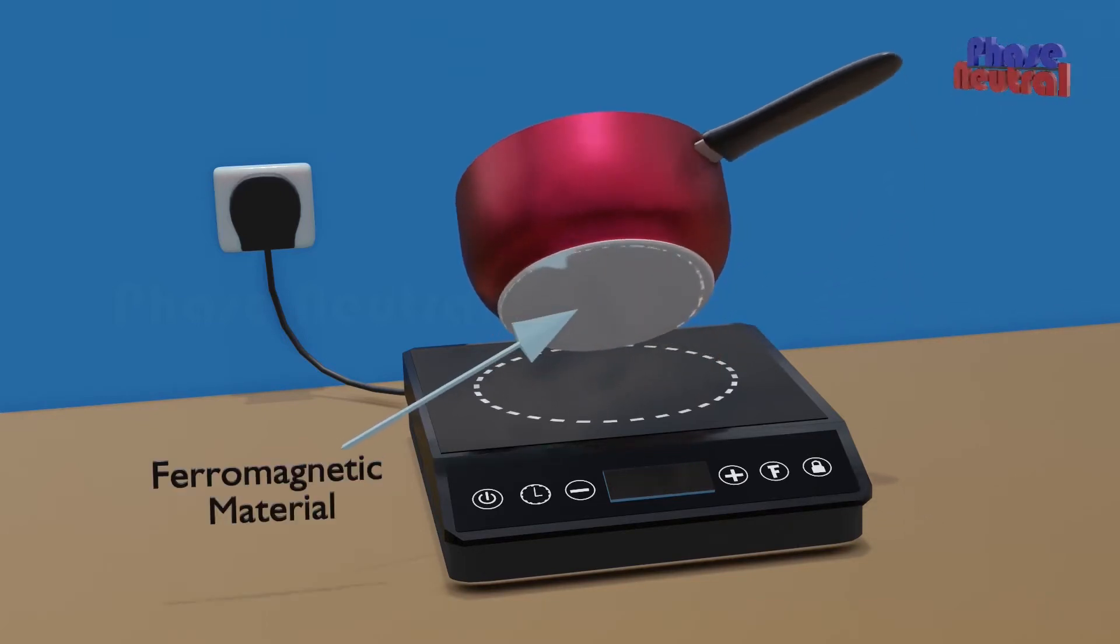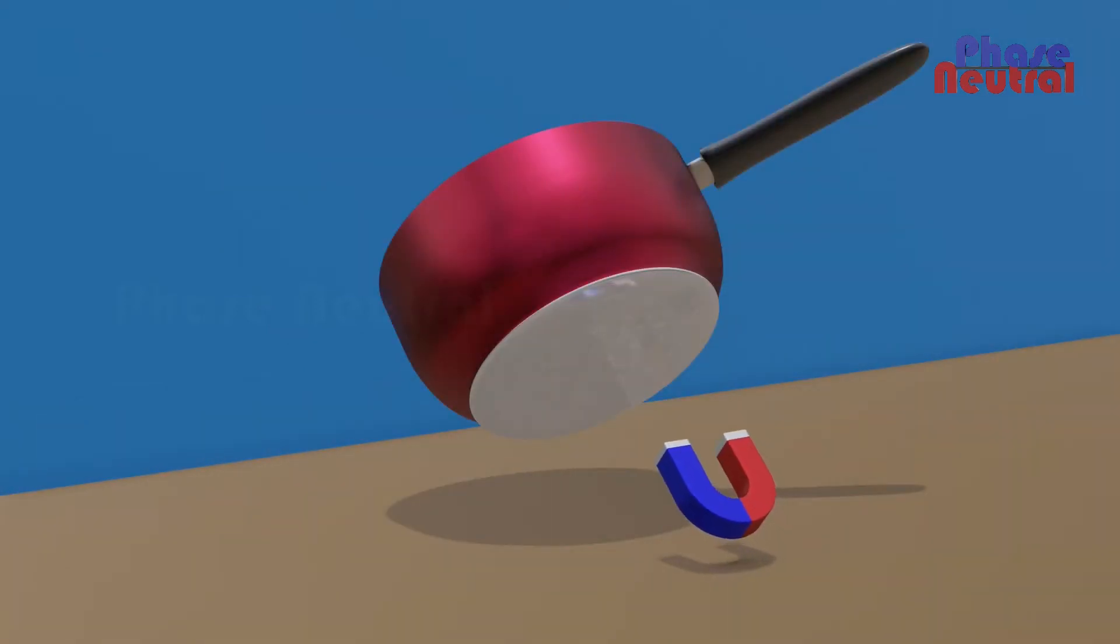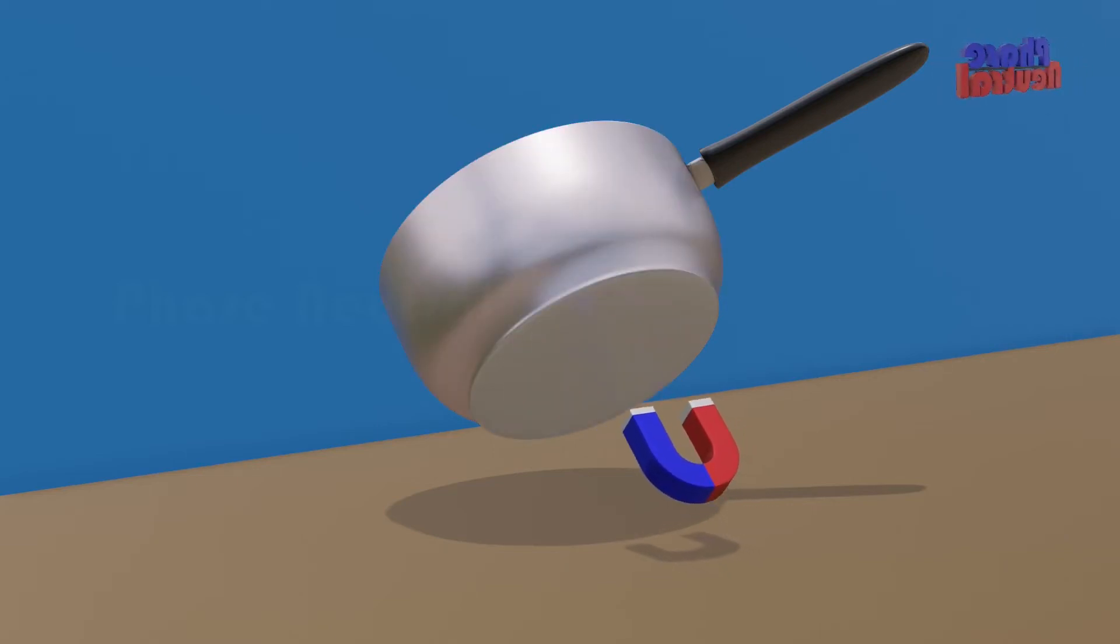This induction based pan's bottom side is made by ferromagnetic material. The easy way to identify a ferromagnetic material is to place a magnet near it. Ferromagnetic material is attracted by magnets, while non-ferromagnetic material is not attracted by a magnet.